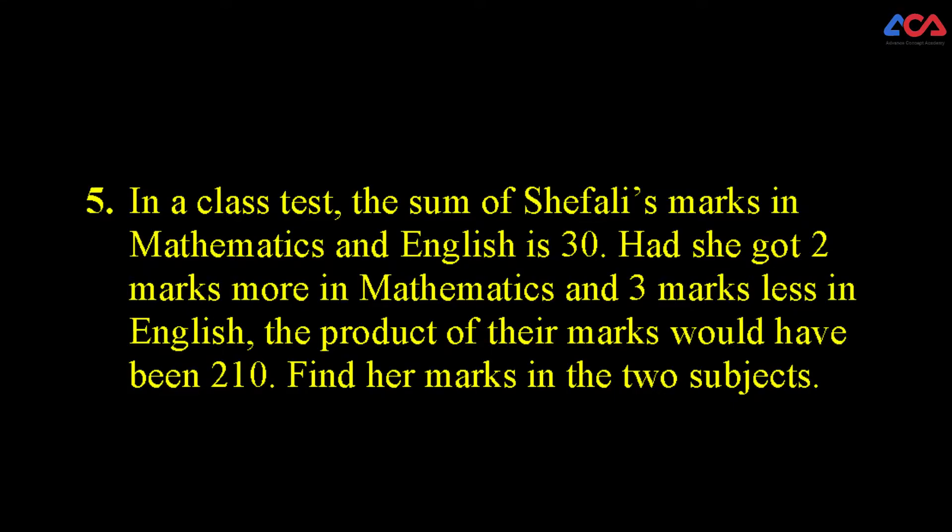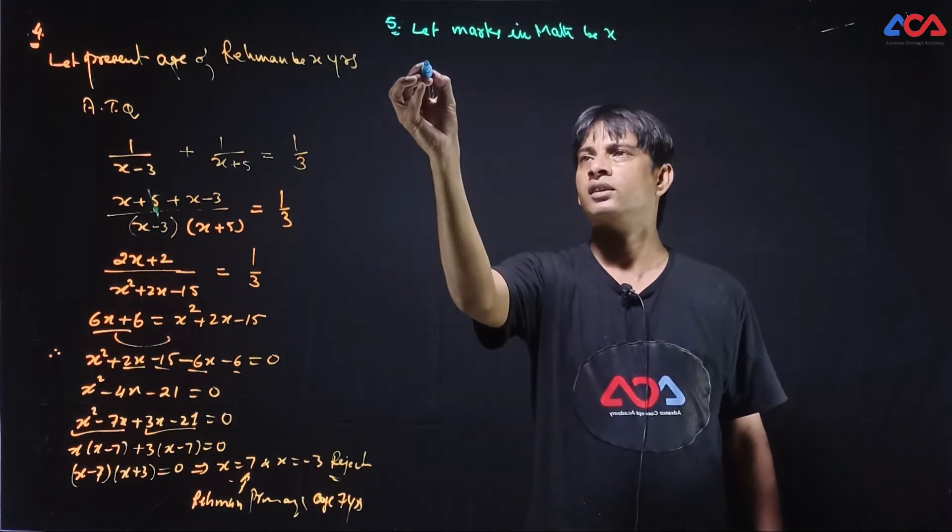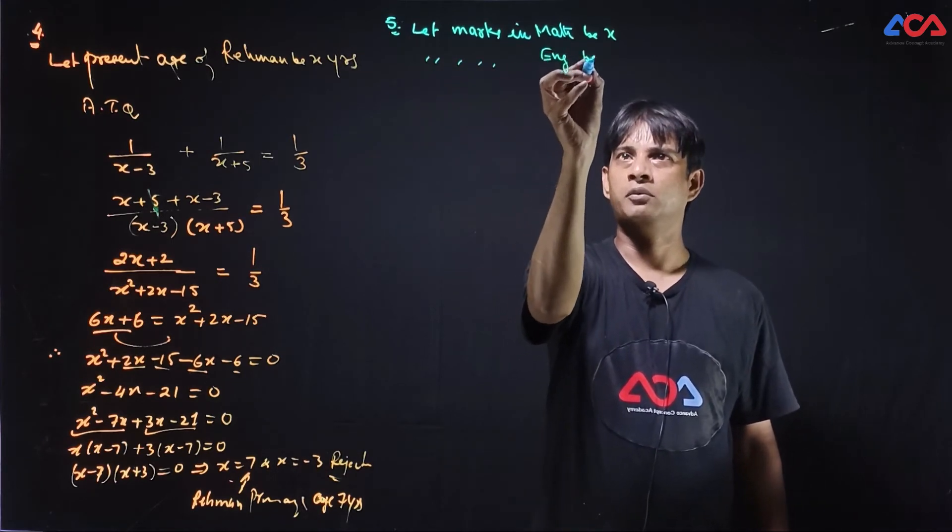5th question. In a class test the sum of Shefali's marks in mathematics and English is 30. Had she got 2 marks more in mathematics and 3 marks less in English the product of their marks would have been 210. Find her marks in both subjects.